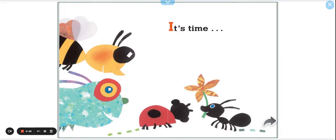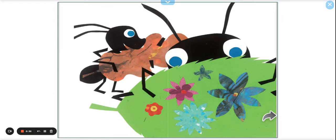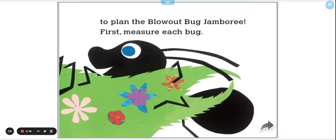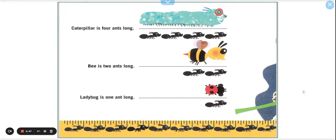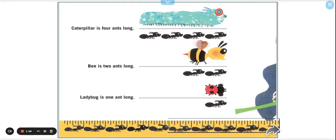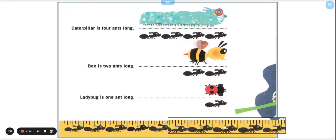It's time. Look how awesome. To plan the blowout bug jamboree, first measure each bug. Caterpillar is four ants long. You see one, two, three, four ants equals the caterpillar. Bee is two ants long. So I see these two ants of the same size as the first two ants, but our bumblebee is only two ants long. And ladybug is one ant long. So these are equivalent, the ladybug and the ant. And see on our ruler down here? The ants are an inch.